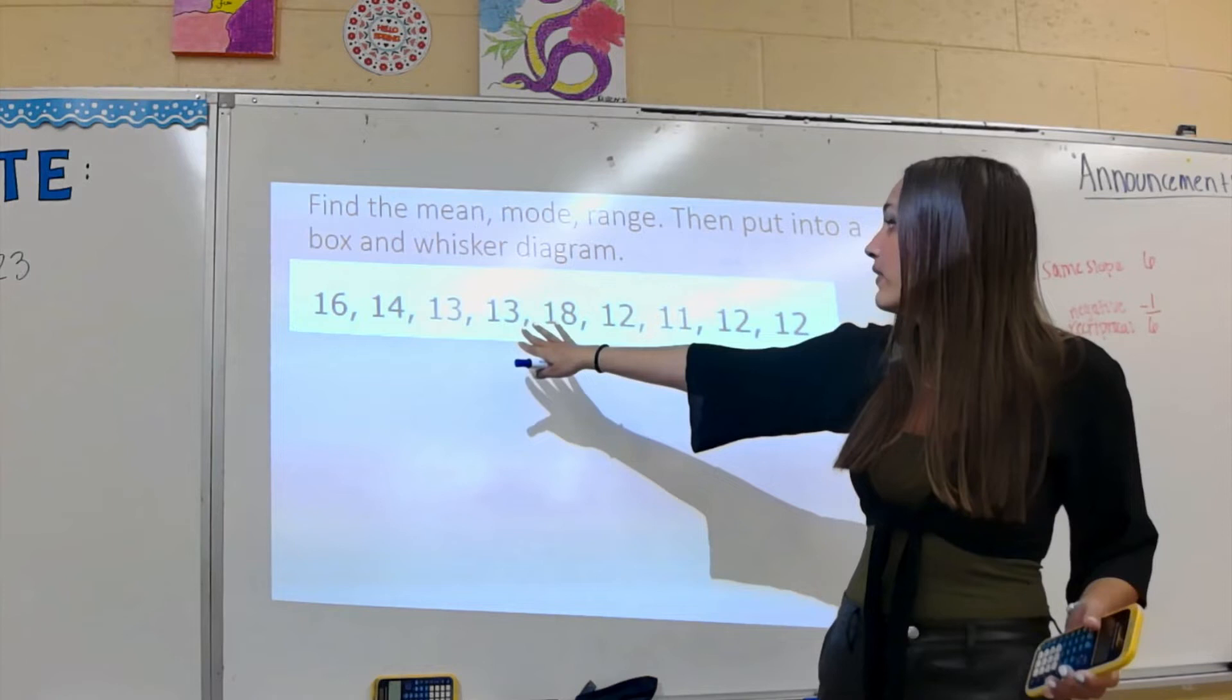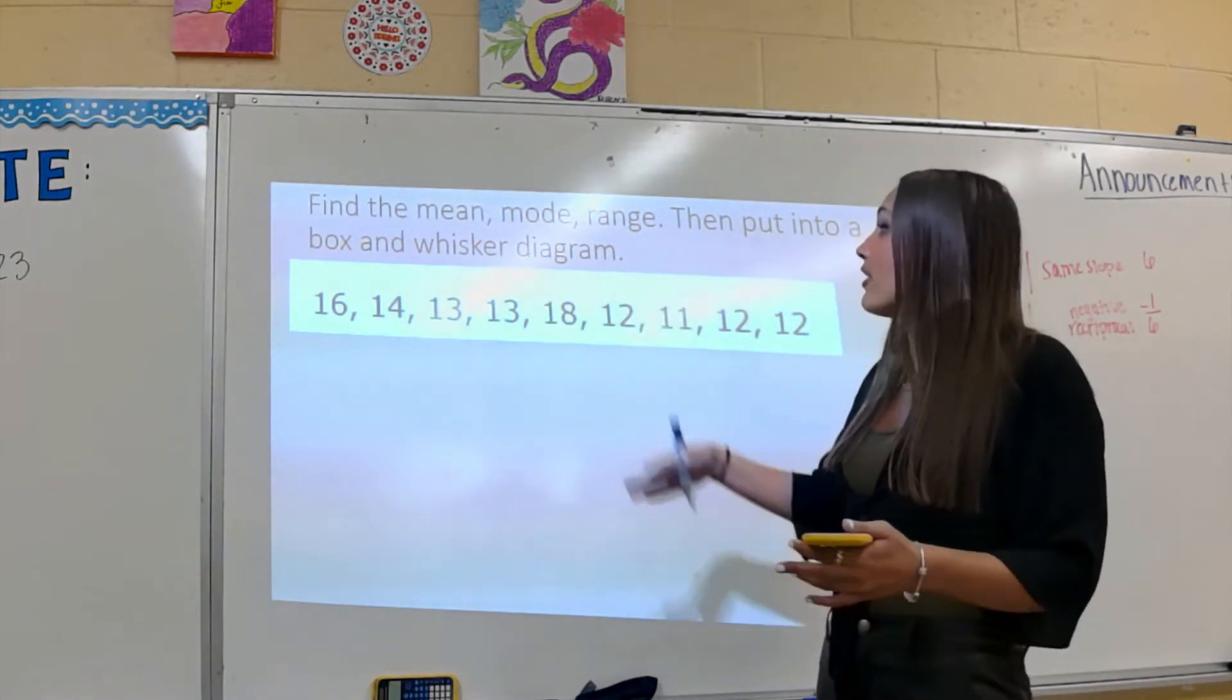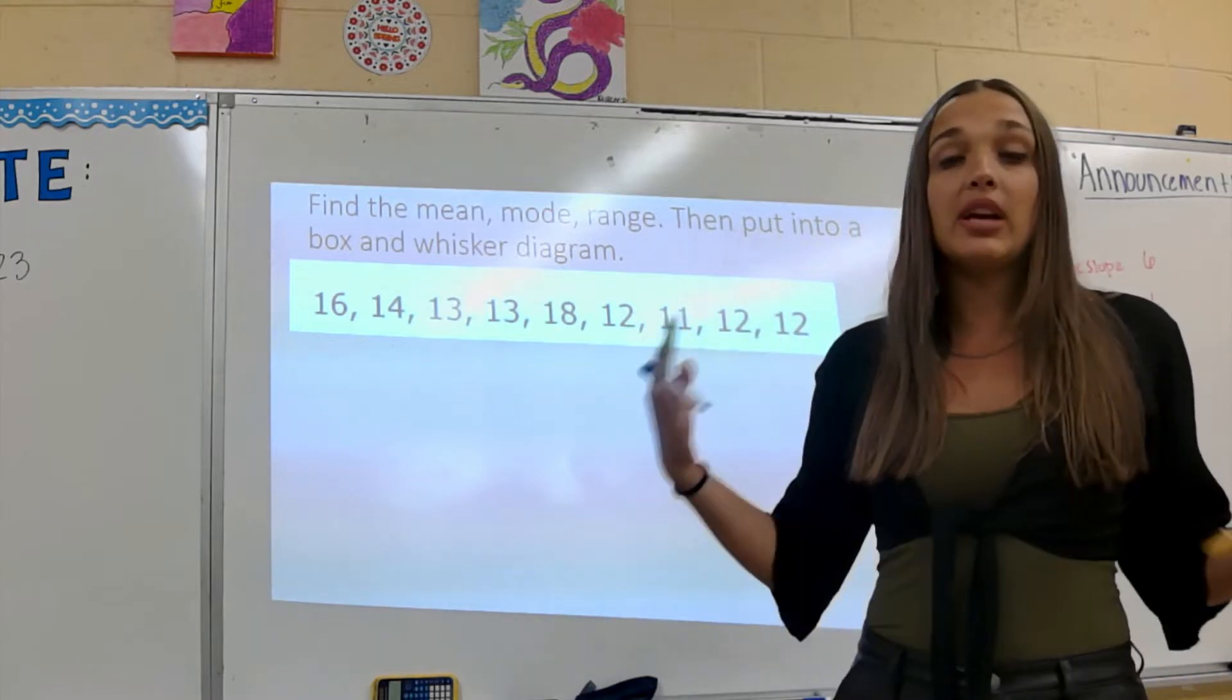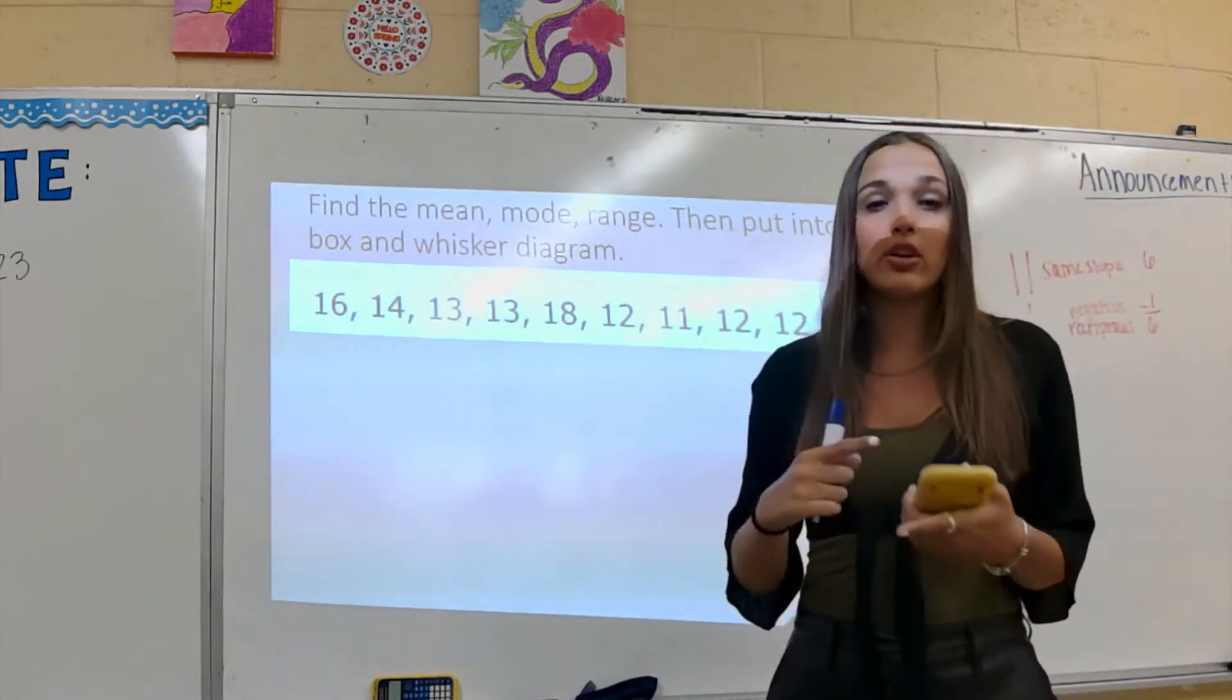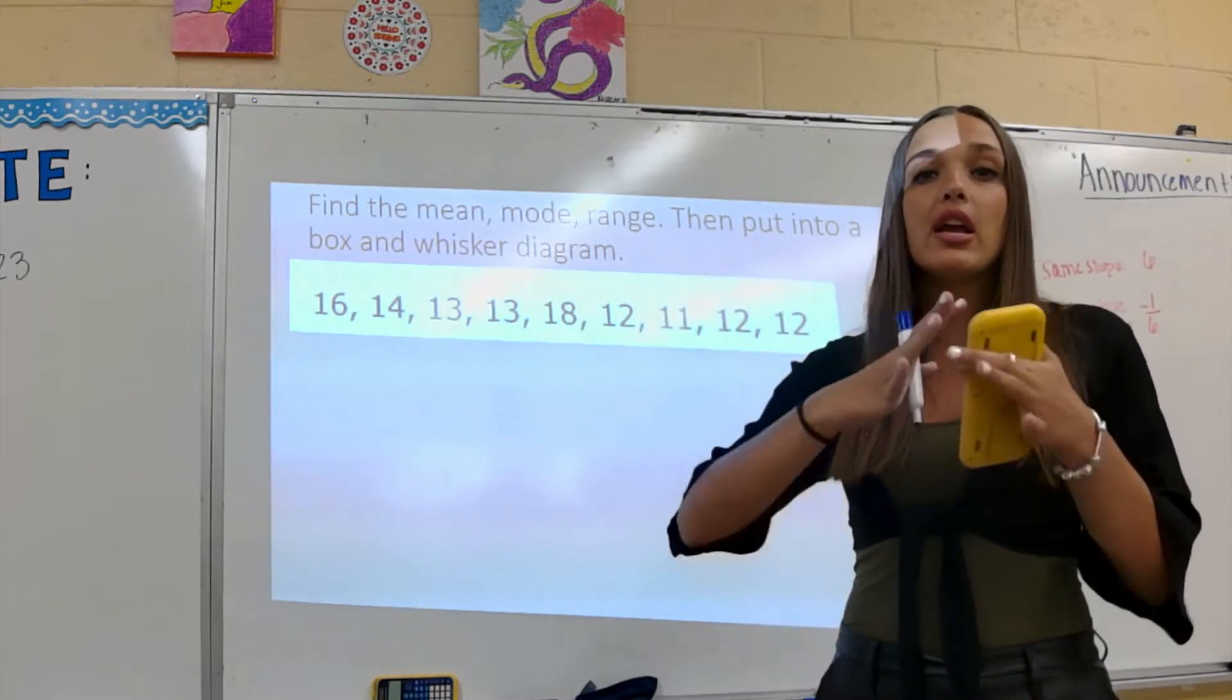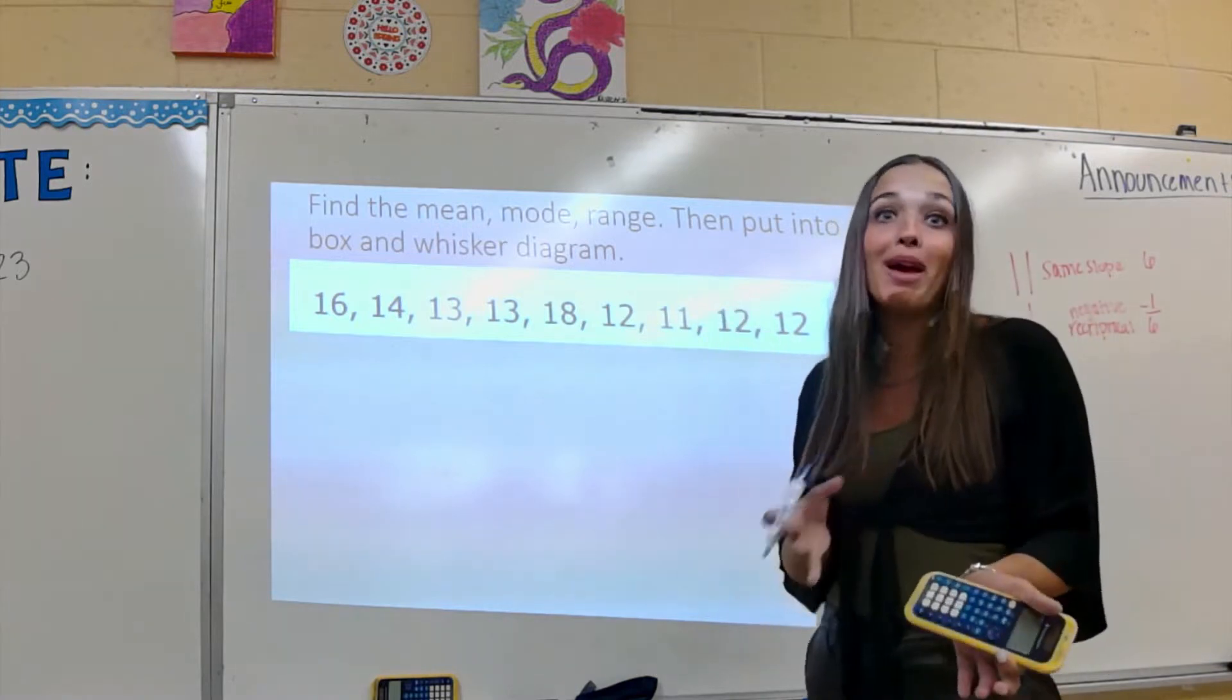For this problem we are given these numbers and we're going to find the mean, the mode, the range, and then put it in a box and whisker diagram. The box and whisker diagram means our quartiles, our Q1, our Q2, our Q3, so we're really encompassing every concept for statistics here that we saw in middle school math class.